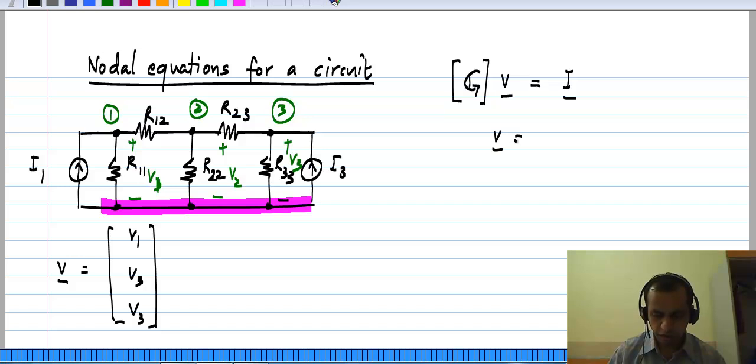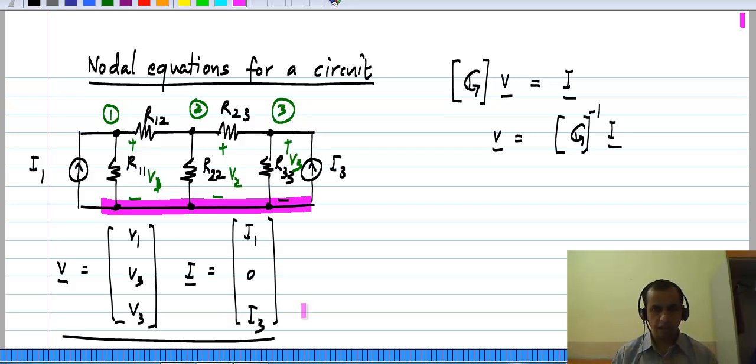And this is what we solve for, when we invert the matrix and multiply the vector of current sources, which in this case is this vector I1, 0, I3.